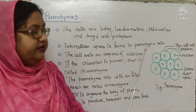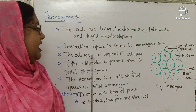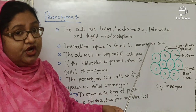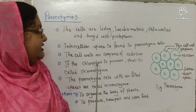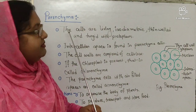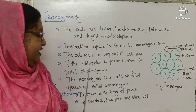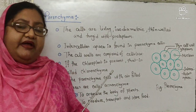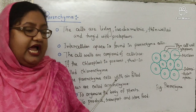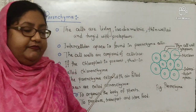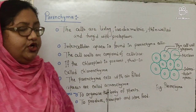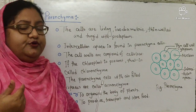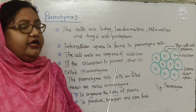The gap between two adjacent cells is known as intercellular space, and intercellular spaces are present here. The cell walls are composed of cellulose — the cell wall is thin and composed of cellulose. If a chloroplast is present in a parenchyma cell, that is called chlorenchyma. If air chambers or air-filled spaces are present in parenchyma cells, those are called aerenchyma. The functions of parenchyma: it helps to organize the body of plants, helps to produce food, transport food, and also stores food.